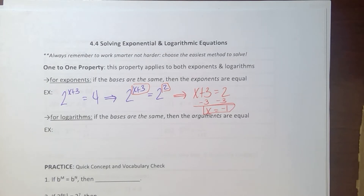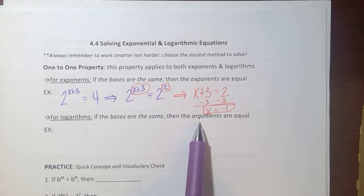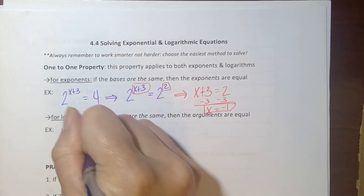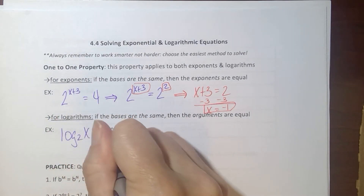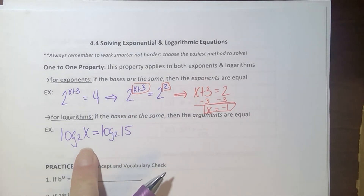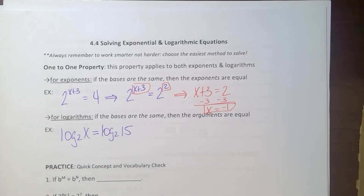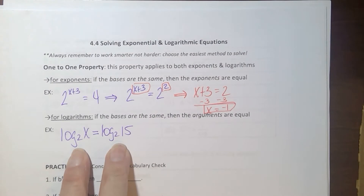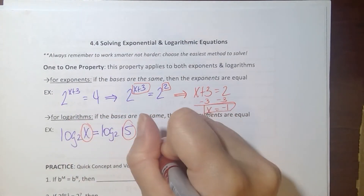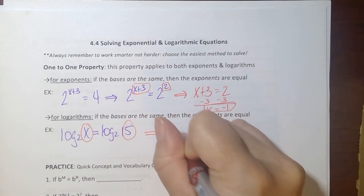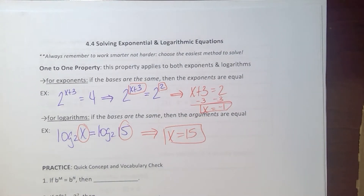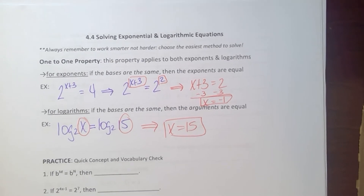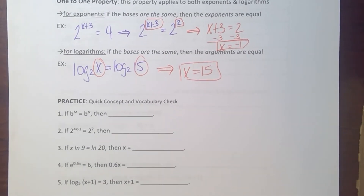Now for logarithms — if the bases are the same, this time I can say the arguments are equal. For example, if I have log base 2 of x equal to log base 2 of 15, the bases are the same, so the arguments are equal and x is just 15. That's the one-to-one property. I love it — it makes life a lot easier when we can use it.